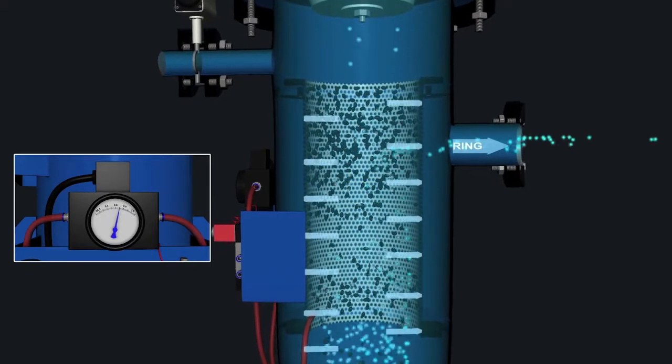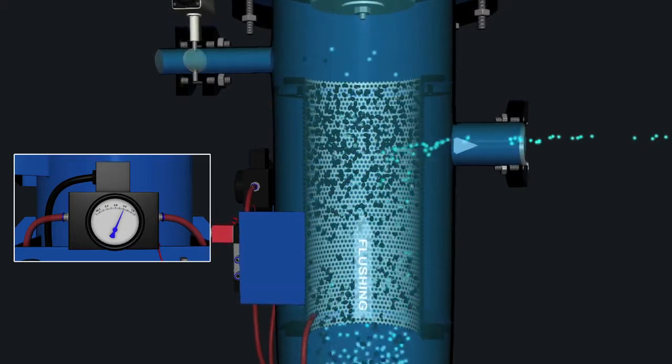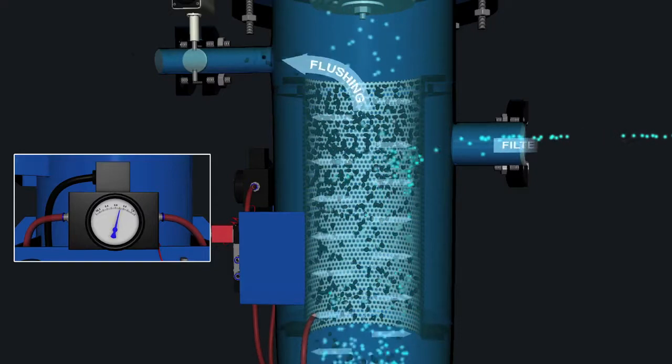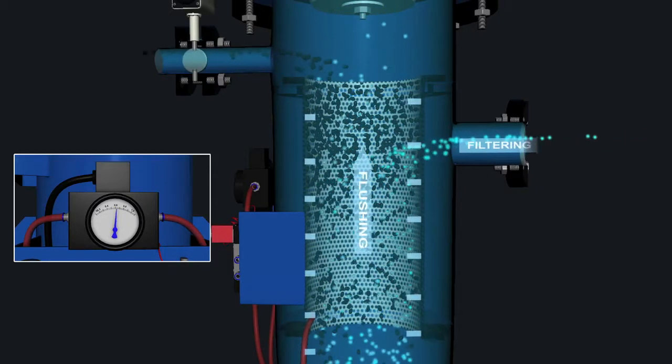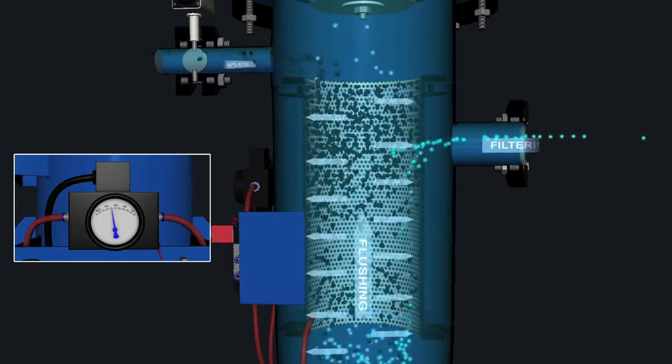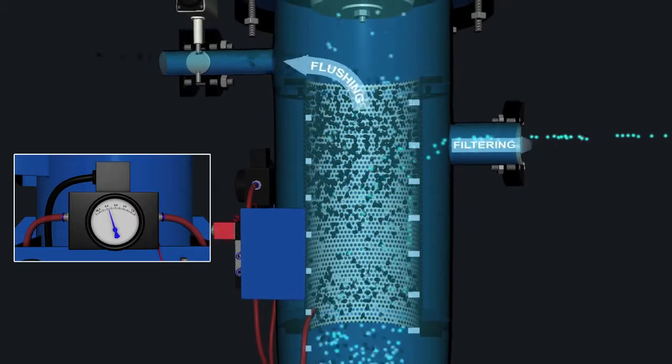On receiving the signal, the control panel opens the auto drain valve. Bigger particles of dirt and impurities are washed out of the filter housing through the drain valve due to incoming flow pressure.